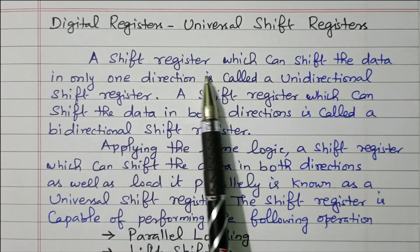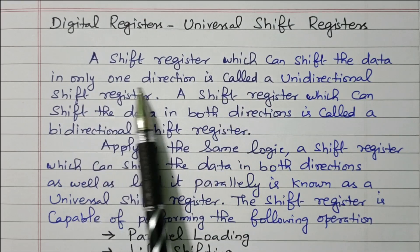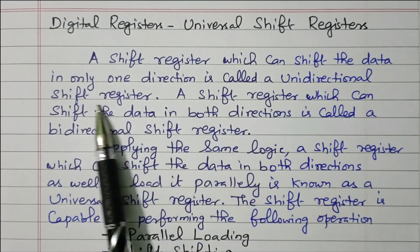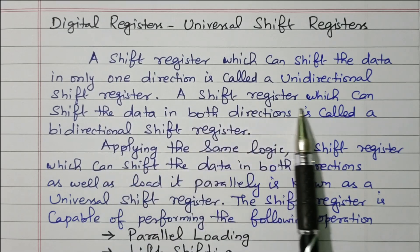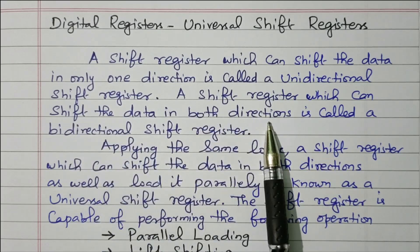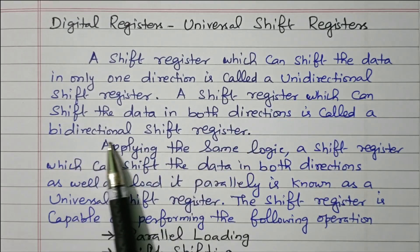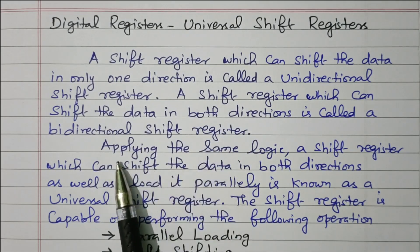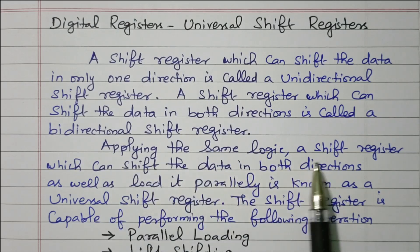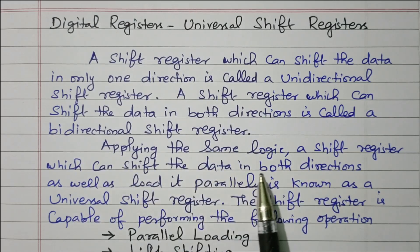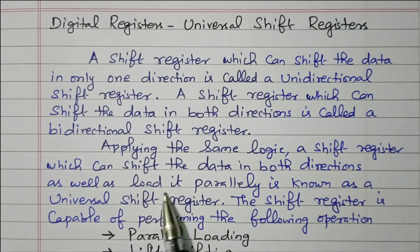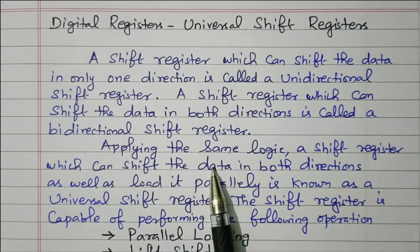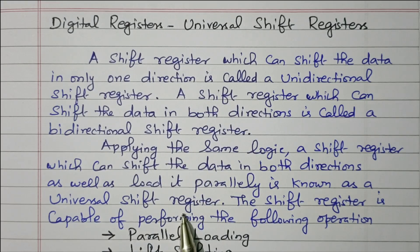A shift register which can shift data in only one direction is called a unidirectional shift register. A shift register which can shift data in both directions — right side as well as left side — is called a bi-directional shift register. Unidirectional means only one direction; bi-directional means both directions.